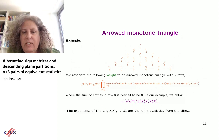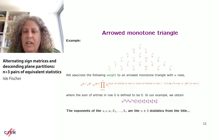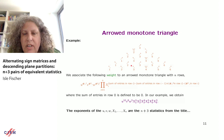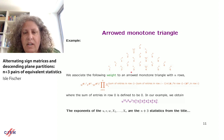The n+3 statistics from the title are simply the exponents in this monomial. The connection to Schur polynomials gives some intuition: Gelfand-Zetlin patterns are like monotone triangles without the strict increase along rows, and their generating function gives Schur polynomials. Arrowed monotone triangles are a variation where arrows also contribute to the weight.